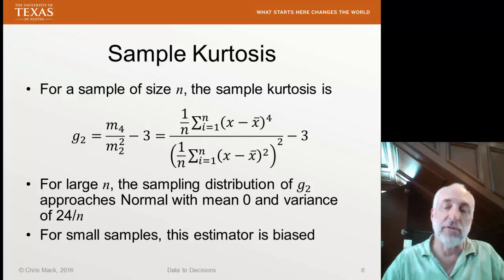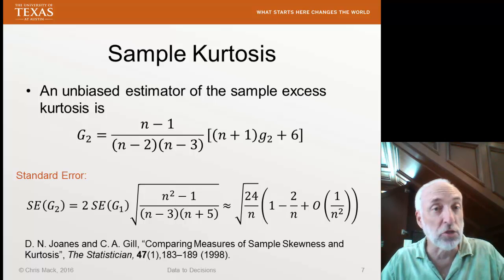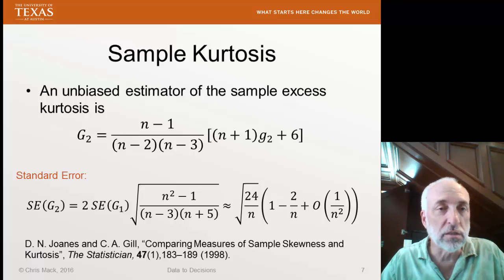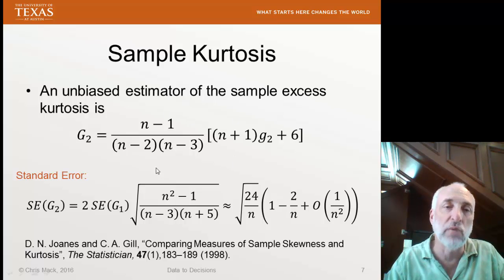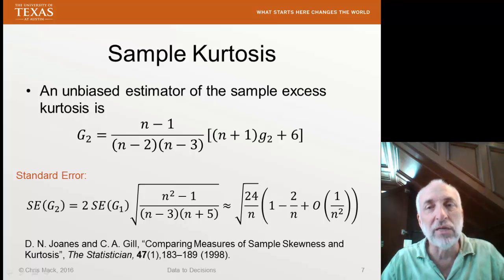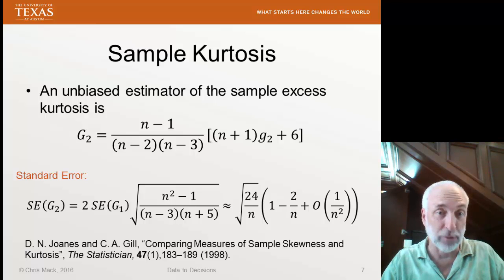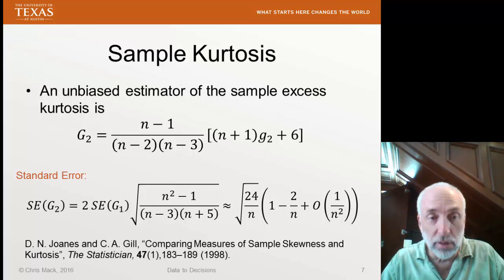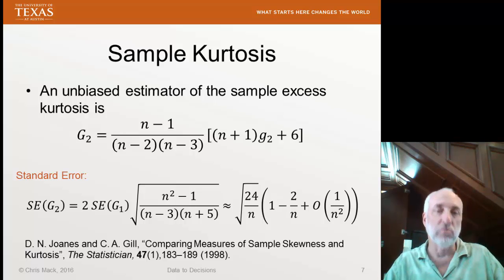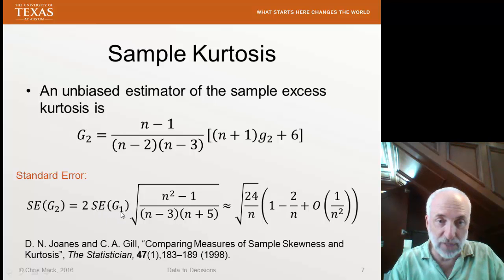For small samples, this estimator is biased. Just like we saw last time with the sample skewness, we can develop an unbiased estimator by multiplying by a factor that goes to one when n is large. So this now is our unbiased estimator of the sample excess kurtosis. We'll call it capital G2. This will be what we actually use for our testing. The standard error of that estimate is given by the equation below. The standard error of G1 is the standard error of our estimate of the skewness, and that was provided in the last lecture.